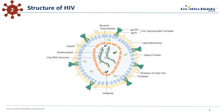Inward, there is a spherical matrix formed by protein P17, and a semi-conical capsid formed by protein P24. The capsid shows a high electron density under electron microscope. The capsid contains the viral RNA genome, reverse transcriptase, integrase, protease, and other components from host cells, such as tRNA-Lys-3, the primer for reverse transcription.